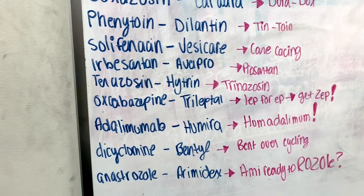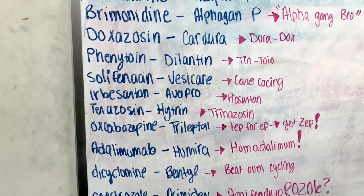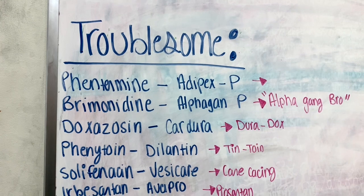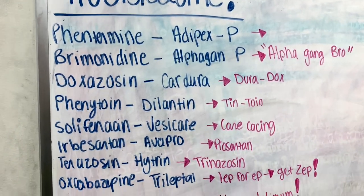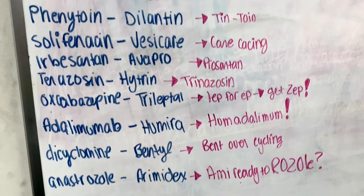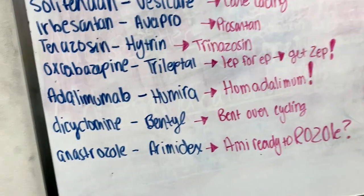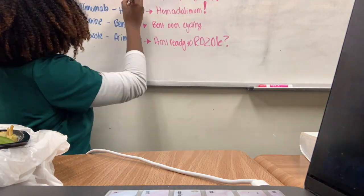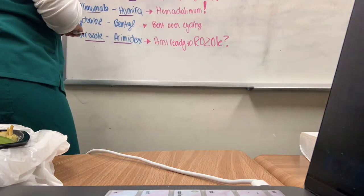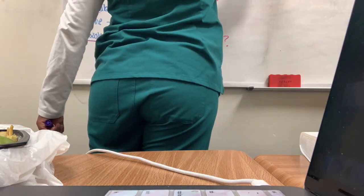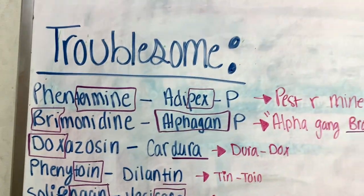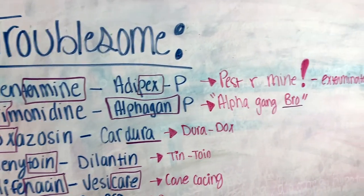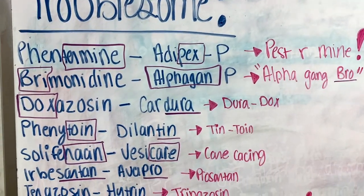Step two is writing out on the whiteboard the names that I'm having trouble piecing together. This is typically because their brand and generic names just don't match whatsoever, so I make up little mnemonics. Step three is annotating what I've already written out just to help with the different mnemonics that I've made.